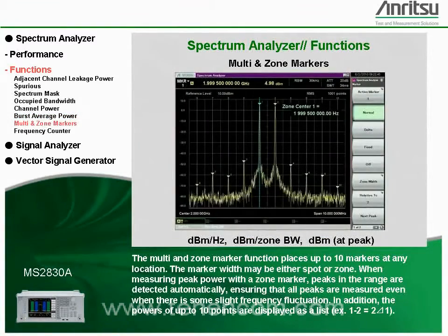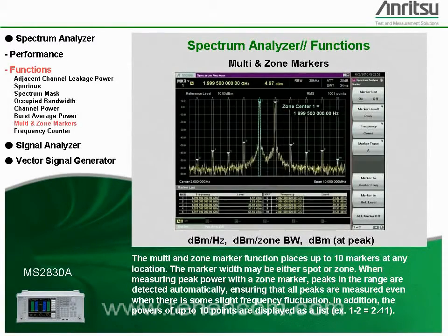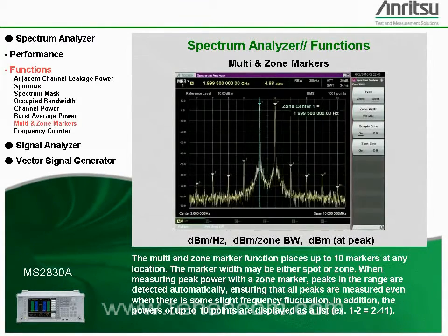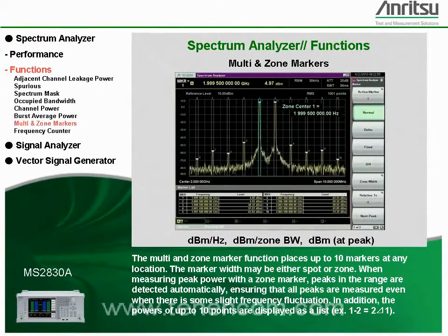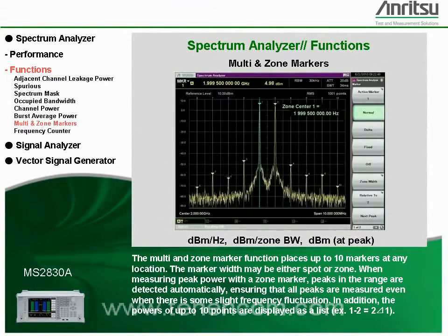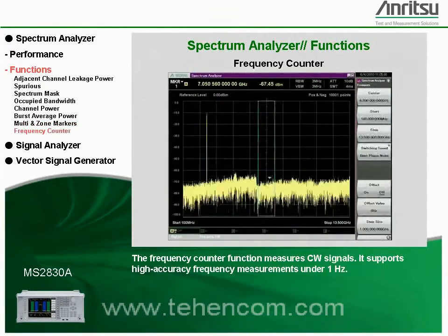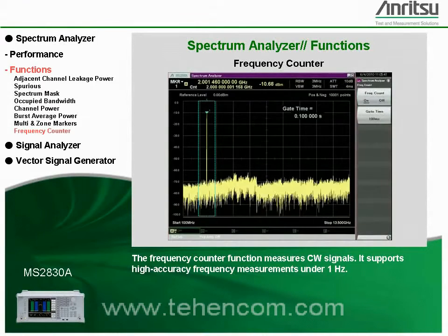The multi- and zone marker function places up to 10 markers at any location. The marker width may be either spot or zone. When measuring peak power with a zone marker, peaks in the range are detected automatically, ensuring that all peaks are measured even when there is some slight frequency fluctuation. In addition, the powers of up to 10 points are displayed as a list. The frequency counter function measures CW signals and supports high-accuracy frequency measurements under 1 Hz.